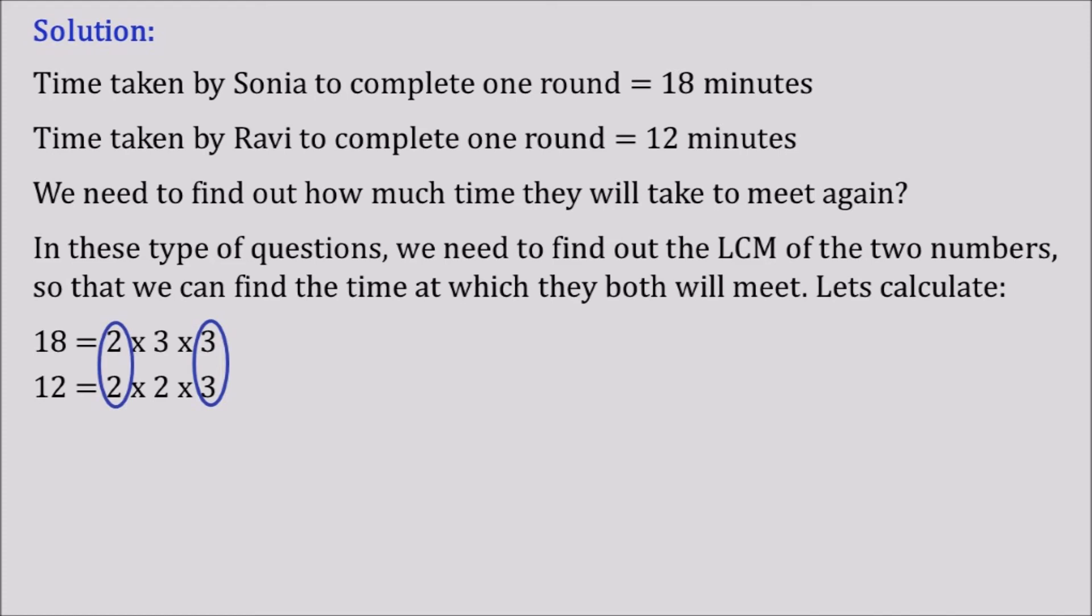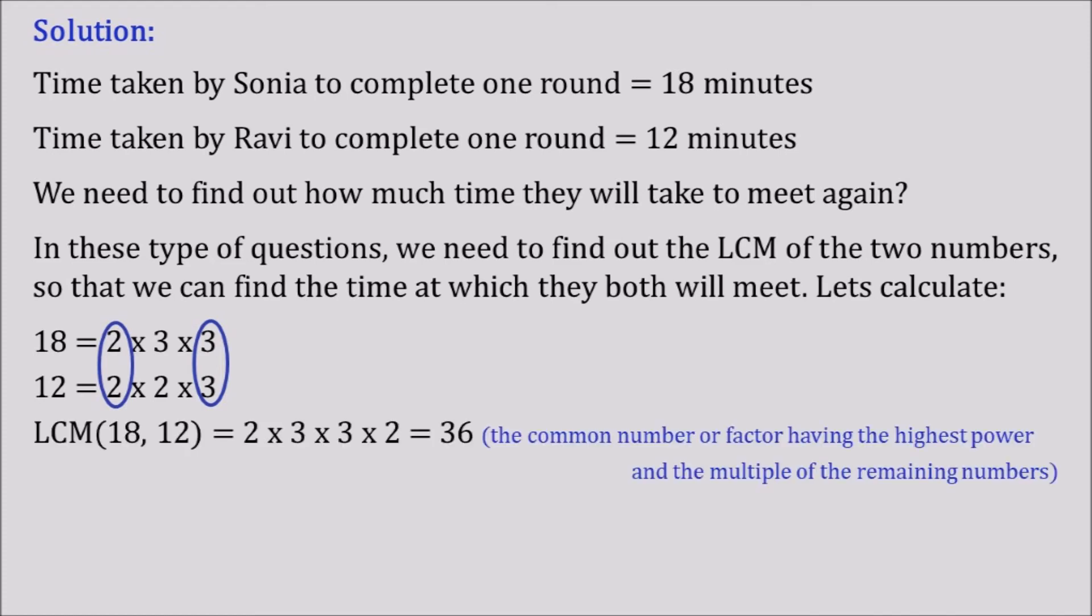Now coming to LCM. So LCM of 18, 12 is equal to 2 into 3 into 3 into 2 that is equal to 36. How we got 36? If you look into the definition of LCM, the LCM says that the common number or factor having the highest power and the multiple of the remaining numbers.